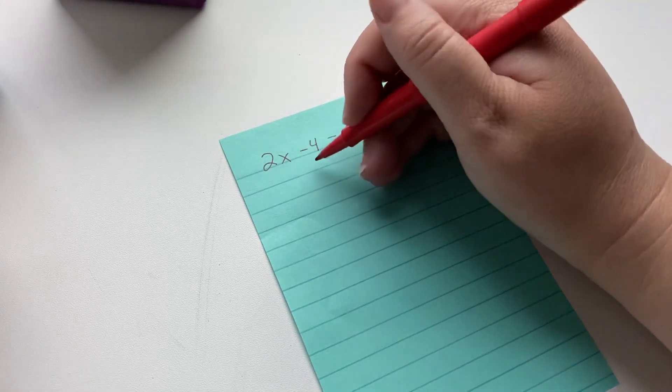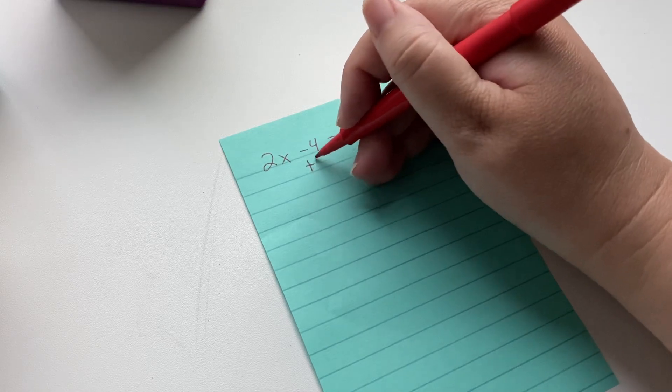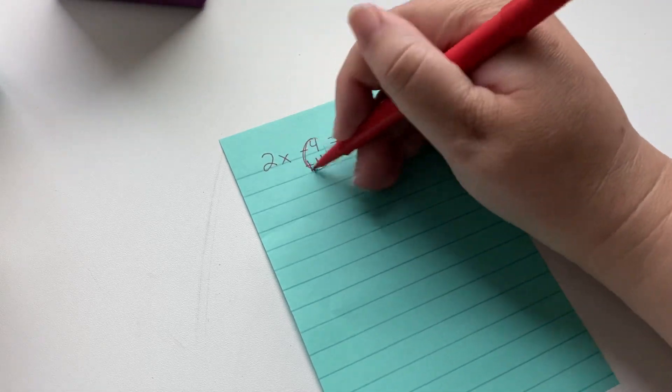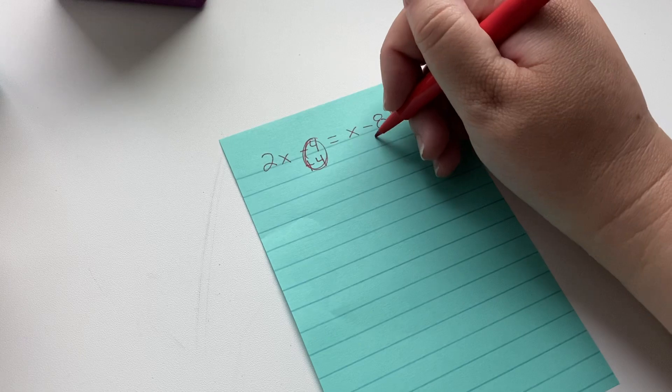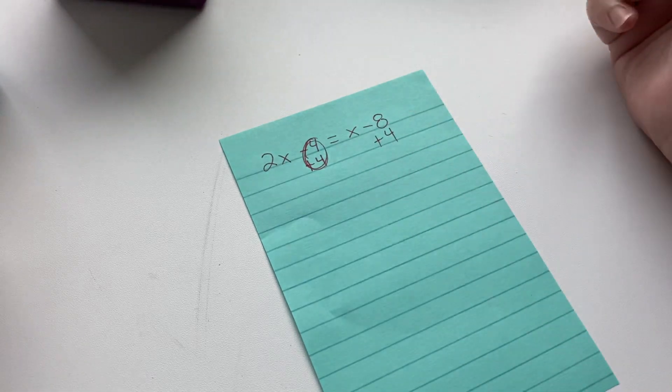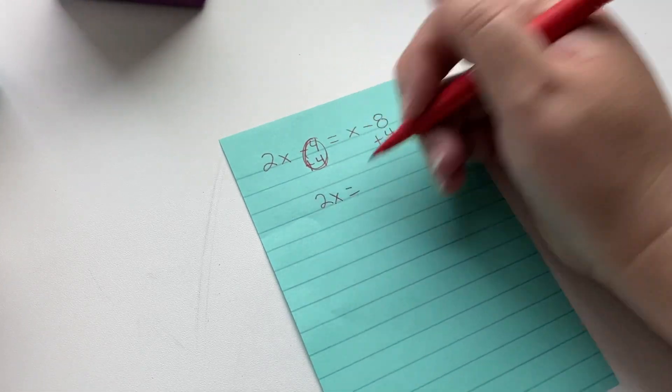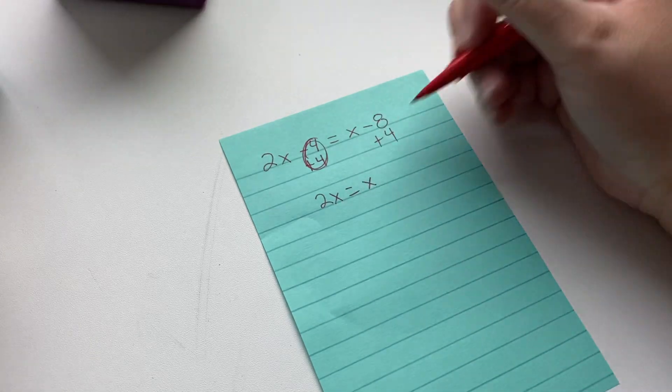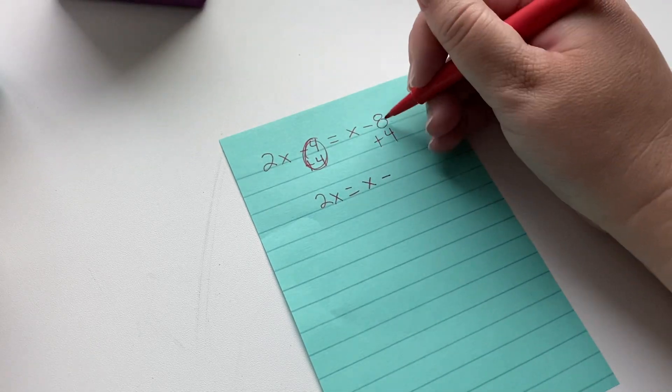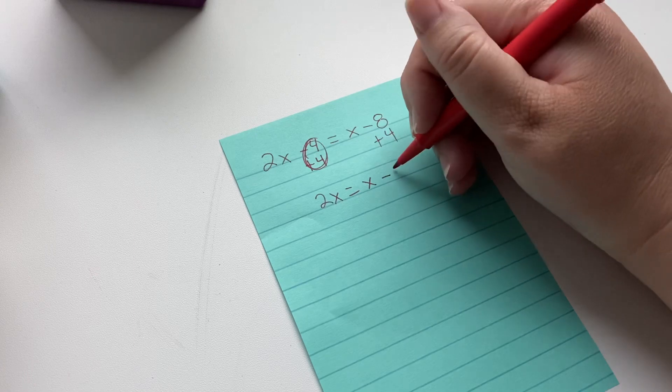So I'm going to eliminate that negative four by adding four, and that becomes zero, but then I have to add four to the other side. Okay, so I get 2x equals x, and then keep the sign of the larger digit, which is 8, subtract them, which is 4.